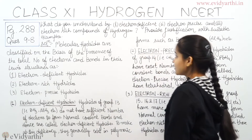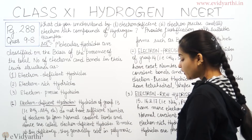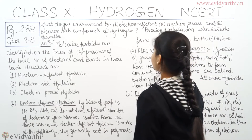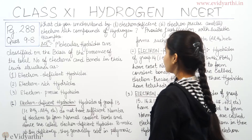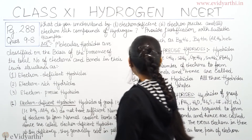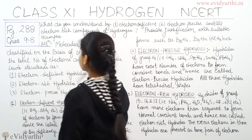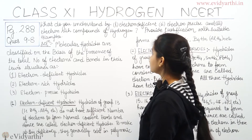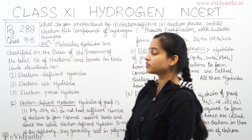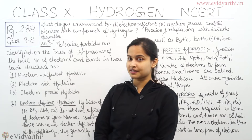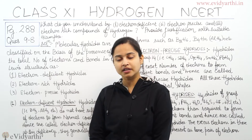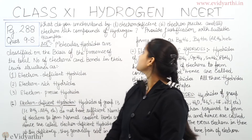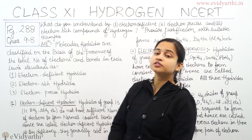The question is: what do you understand by (1) electron deficient, (2) electron precise, and (3) electron rich compounds of hydrogen? Provide justification with suitable examples. So we need to explain what electron deficient, electron precise, and electron rich complexes are in the context of compounds of hydrogen.